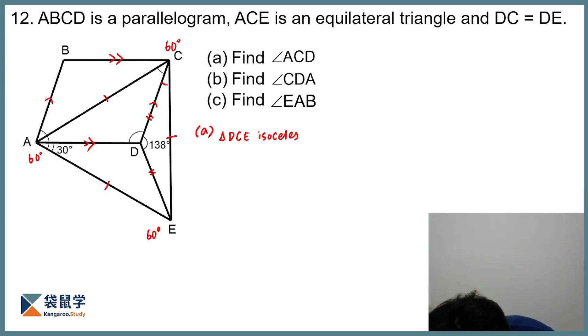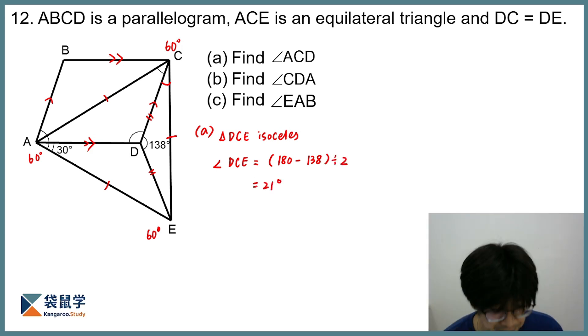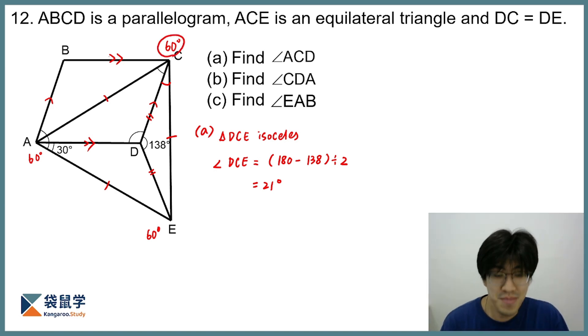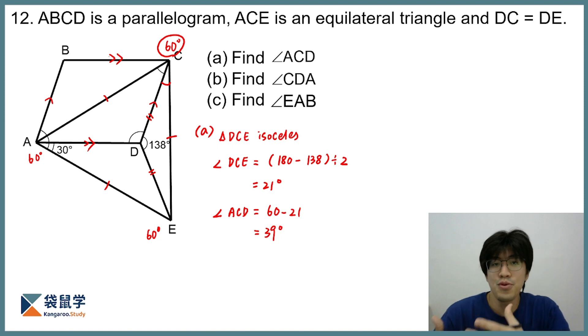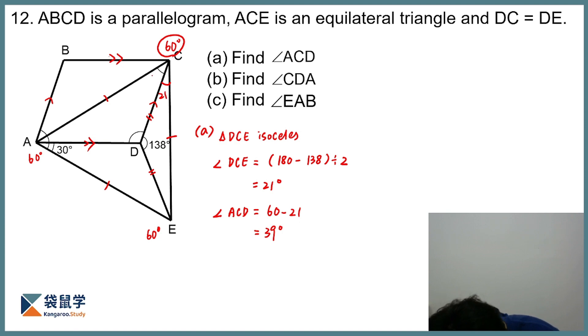And from here, we can actually find out the angle DCE. So the angle DCE is going to be 180 minus 138 divided by 2, and this will give me 21 degrees. And then from there, you can see that labeling the angles really helps because we already know that they should add up to 60. So immediately, angle ACD is simply 60 minus 21, and then we get 39 degrees. And again, whenever you find out some new information, make sure you label them in the diagram.